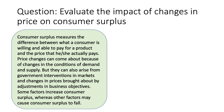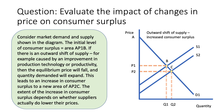The question talks about changes in price, and that can happen because of movements or shifts in the conditions of demand and supply, but also from interventions in markets by the government or a regulator, or perhaps a change in price from a change in business objectives. Some factors will increase consumer surplus whereas other factors may cause consumer surplus to fall.